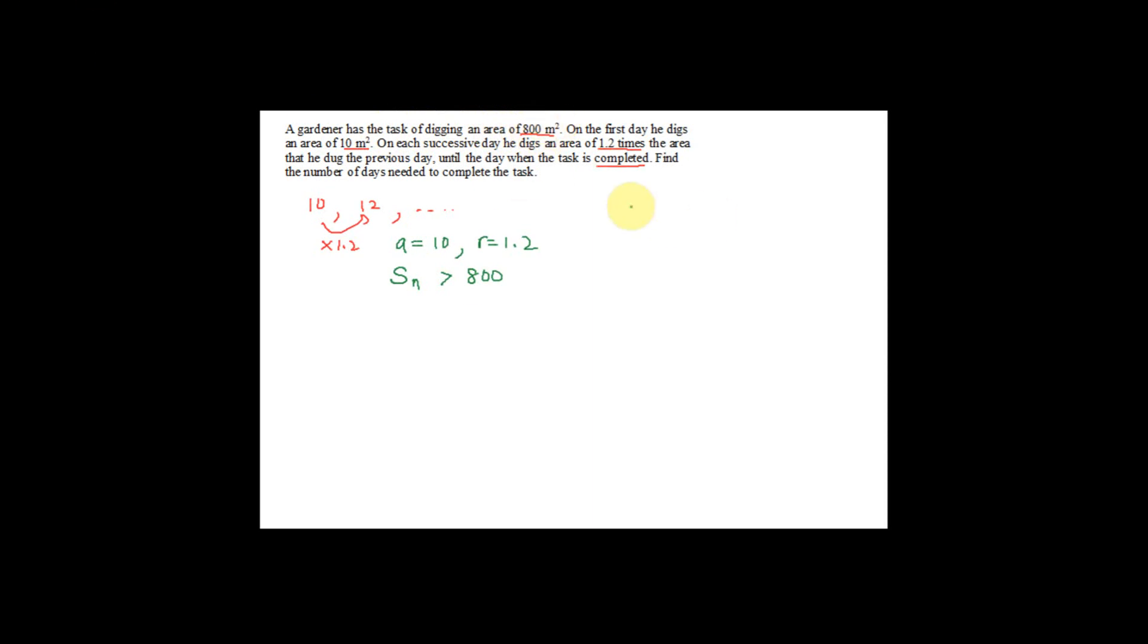So you need to apply SN formula. SN equals a times r to the n minus 1 over r minus 1. Make sure you don't make any calculation mistake. So what is your a, which is 10, r to the n minus 1, so 1.2 power n minus 1, divided by r minus 1, more than 800. So first, 1.2 minus 1 is 0.2. You have 10 times 1.2 power n minus 1 more than 800. Multiply with 0.2, you have 160.